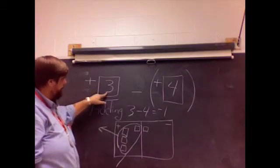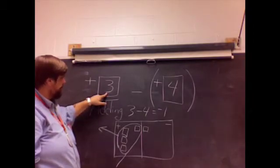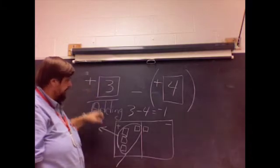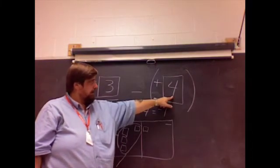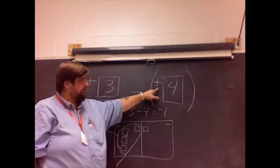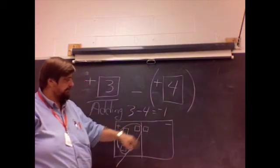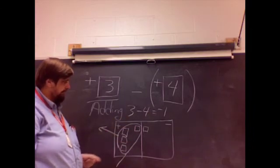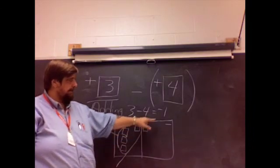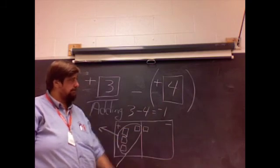So we add three integers to the positive side of the board. We take away four, in this case, from the positive side of the board. And we use our zero pairs to enable us to remove that fourth block, which leaves us with one block on the negative side of the board.